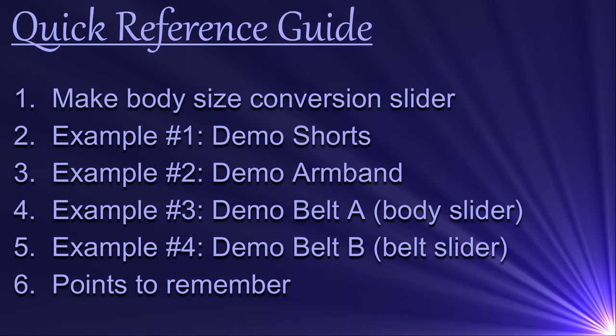Here is what we're going to do today. We will first make a body size conversion slider and then apply it to the demo shorts to turn the size 0 mesh into a size 1 mesh. Then we will do the same thing for the demo armband. For the belt, we will do it two ways — first using the body and then using the original belt meshes to create a slider, which will give us more precise morphing and let us compare how each approach affects the final conversion results.